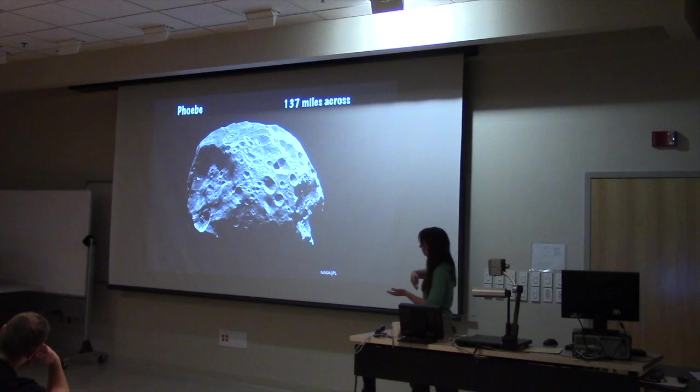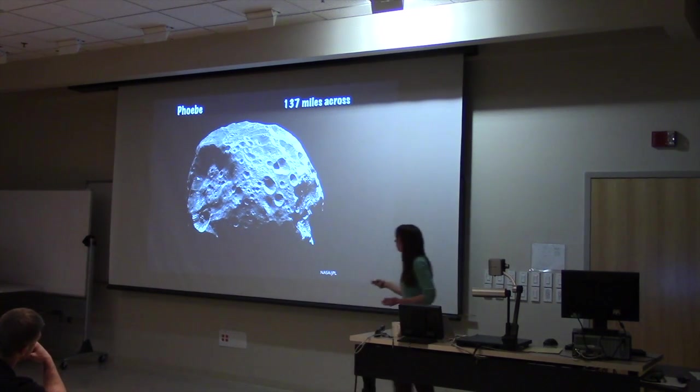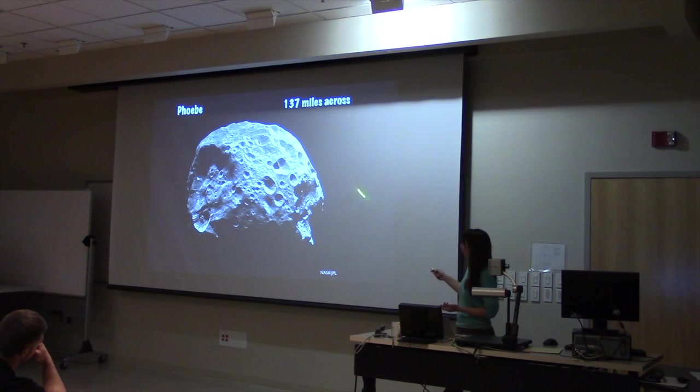So this object, sometimes the Kuiper Belt objects are thrown into the inner solar system. A lot of comets come from the Kuiper Belt. This object must have been thrown in from the Kuiper Belt and then somehow captured by Saturn's gravitational field. But instantly we know more about this moon than we could have ever discovered by just observing it from the Earth.